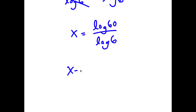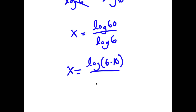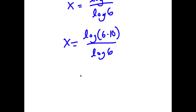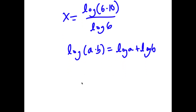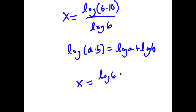Now, log 60 I can rewrite as log of 6 times 10, so I have this over log 6. And if I have something in the form log of a times b, this is equal to log a plus log b. So log 6 times 10 is going to equal log 6 plus log 10, and I have this over log 6.